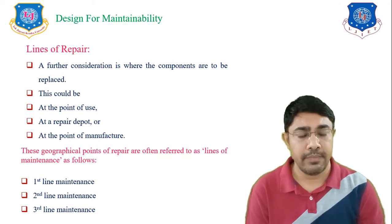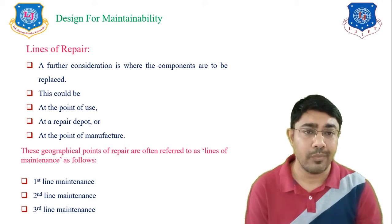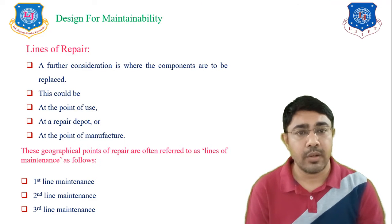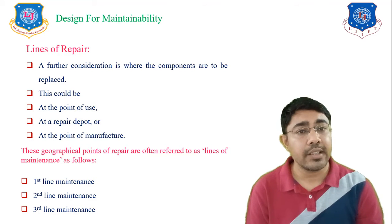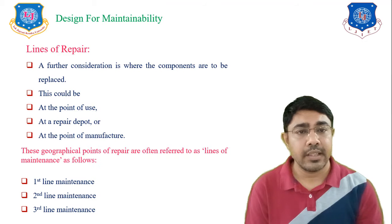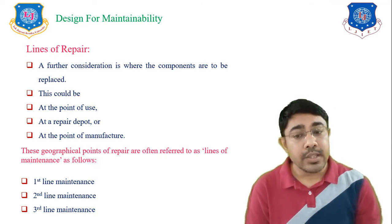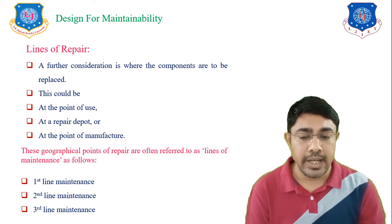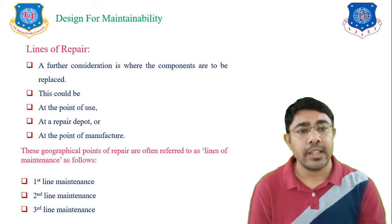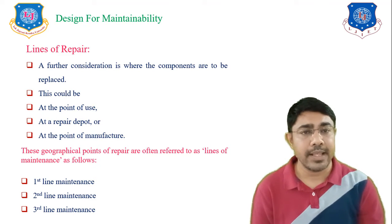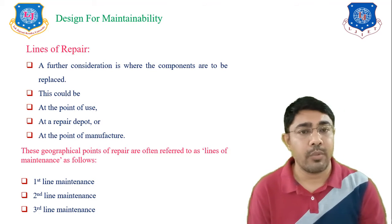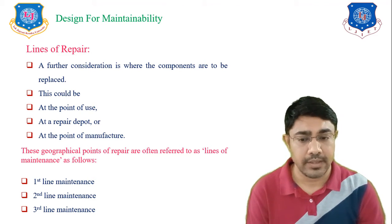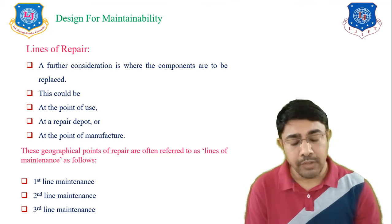Next is the lines of repair. Once a component is failed, the question is where it is repaired or replaced. There are three locations: first, at the point of use — where the customer uses the product; second, at a repair depot — where service centers are available; and third, at the point of manufacturer — where the company manufactures the components. These are the three points where a product can be replaced.